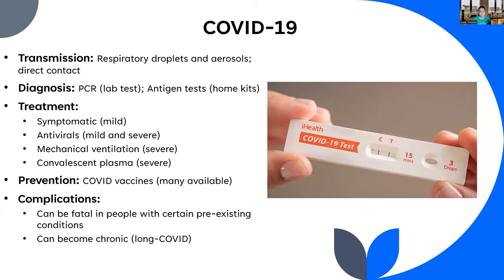Diagnosis: the lab test is via PCR, although we now have widely available antigen tests at home. If you test positive on a home test and need confirmation, a PCR lab test will do it. Treatment: if mild and symptomatic, or for immunocompromised patients, antivirals are available. For severe cases requiring hospitalization, convalescent plasma can still be used, and mechanical ventilation may be required.